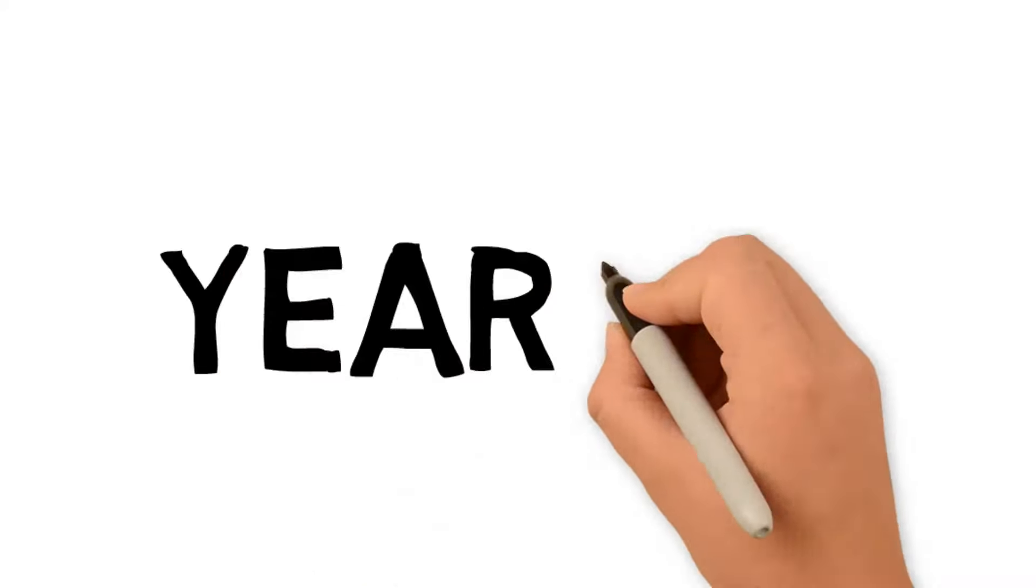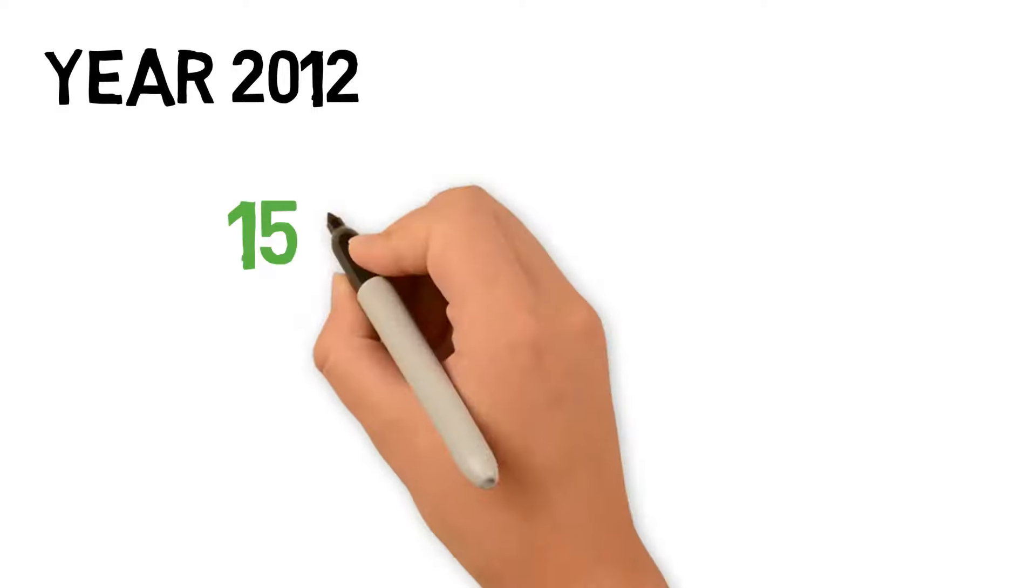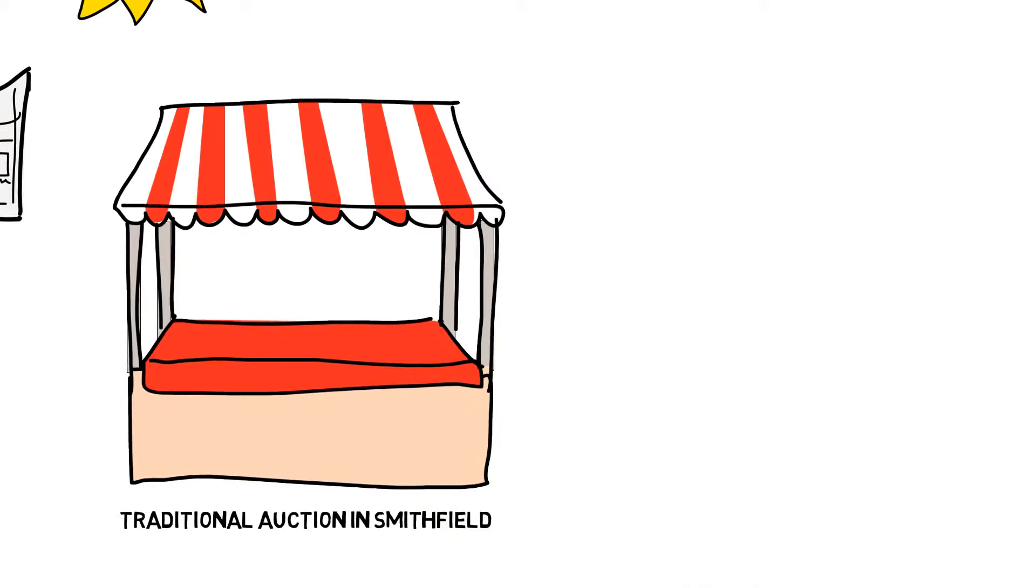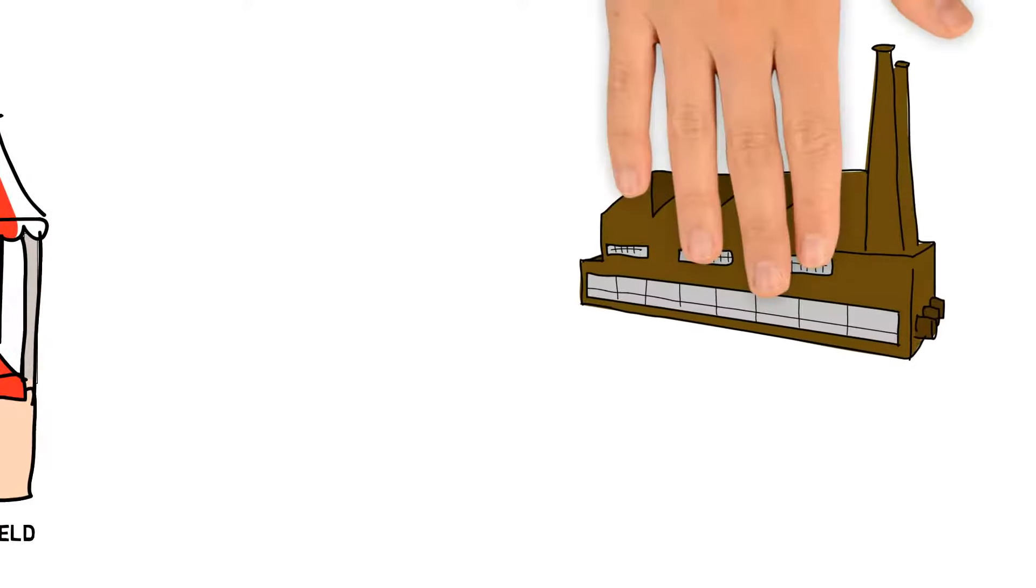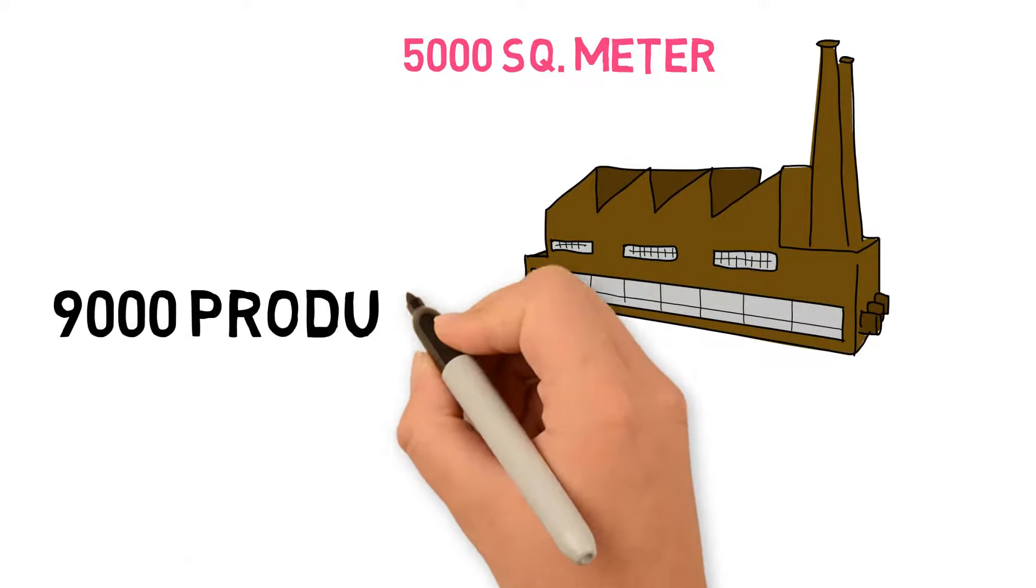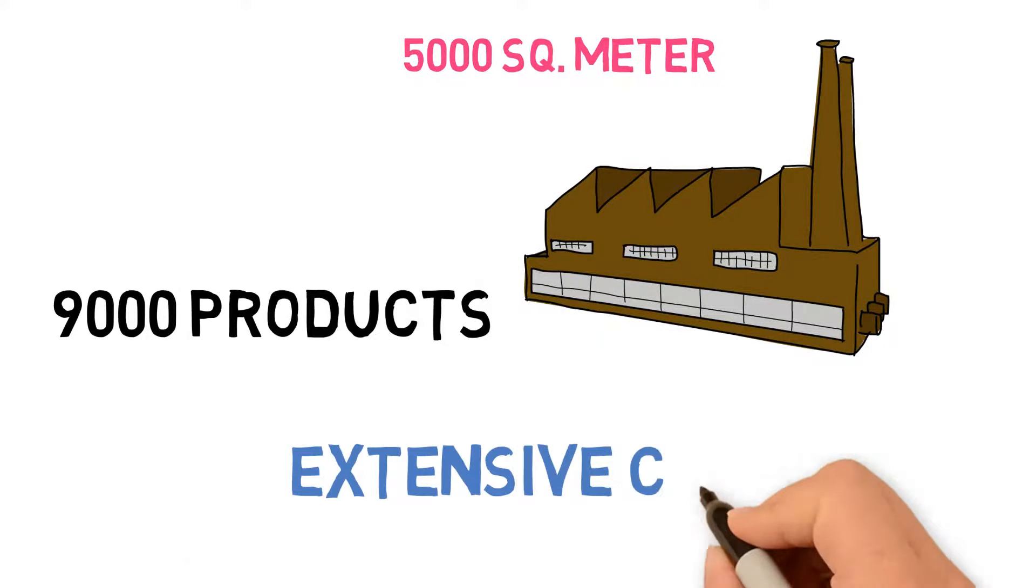In 2012, the product range topped 1,500 products, and we were scrambling for space to grow further and offer much more to our clients. So we moved to Smithfield, where we currently are, a 5,000-square-meter warehouse that holds more than 9,000 products and covers many categories extensively, including commercial kitchen equipment.